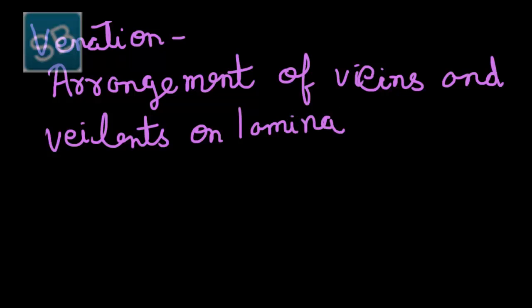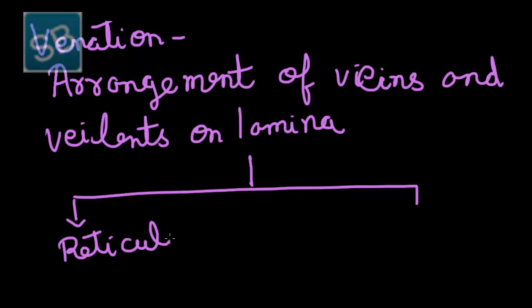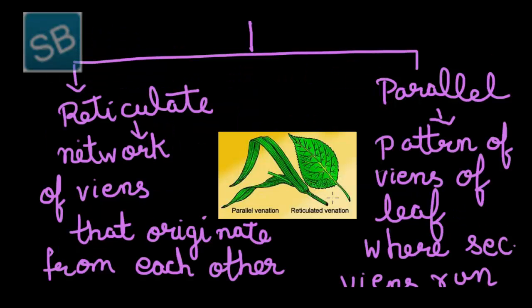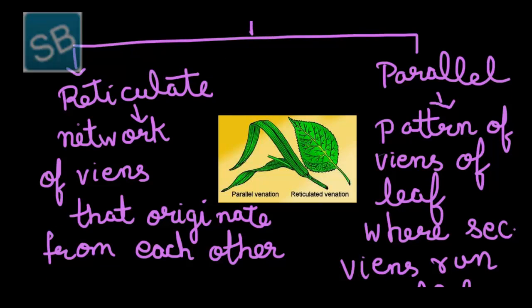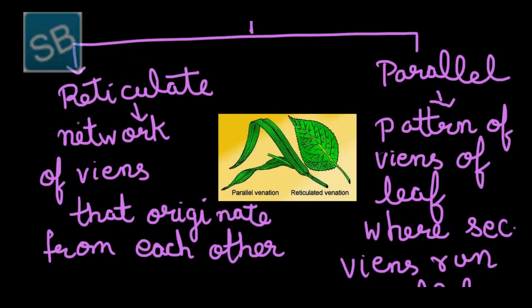Basically two types of venation occurs: reticulate and parallel venation. In reticulate venation, a network of veins is formed that originates from each other. Such venation generally occurs in dicotyledonous plants.